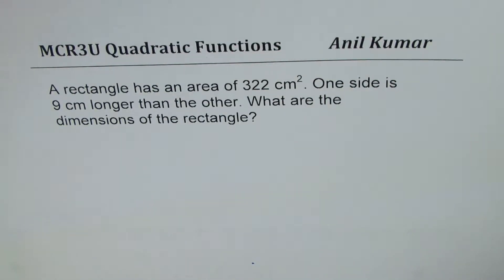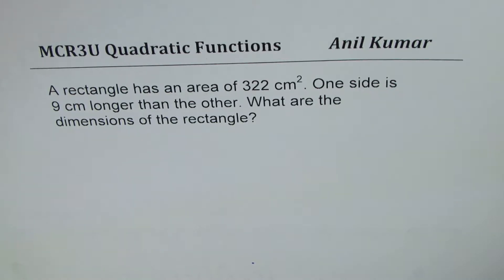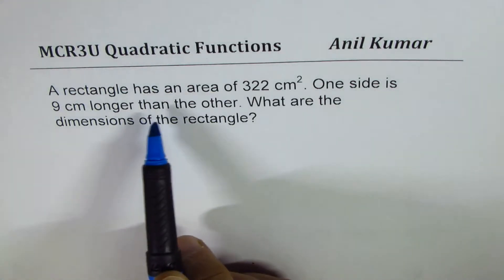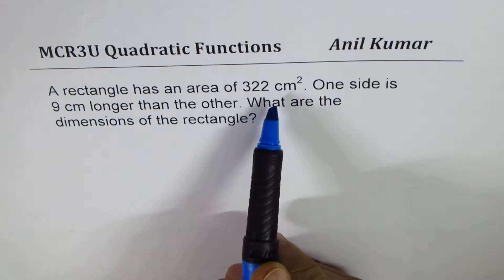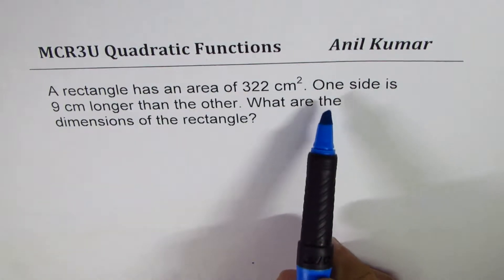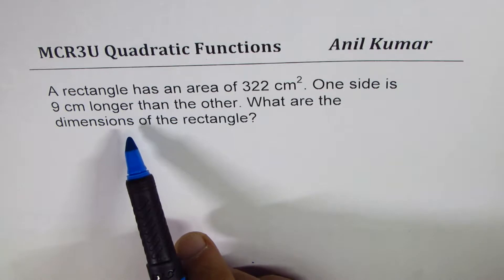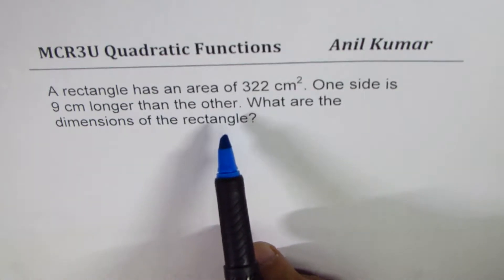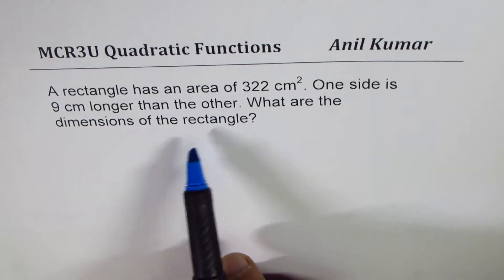I'm Anil Kumar sharing with you a word problem on quadratic functions. The question is: a rectangle has an area of 322 square centimeters. One side is 9 centimeters longer than the other. What are the dimensions of the rectangle?